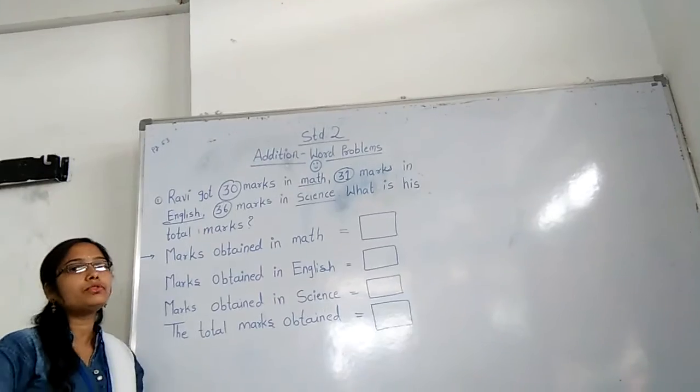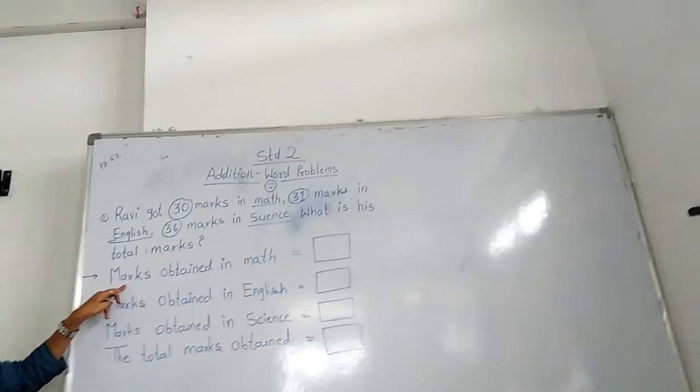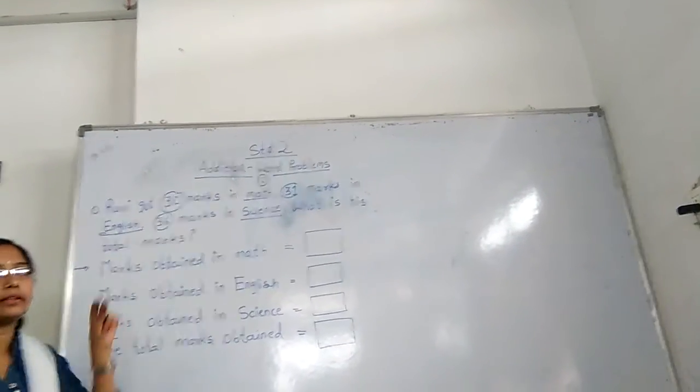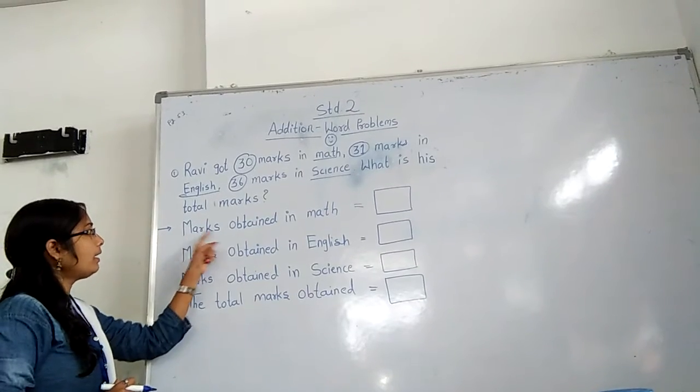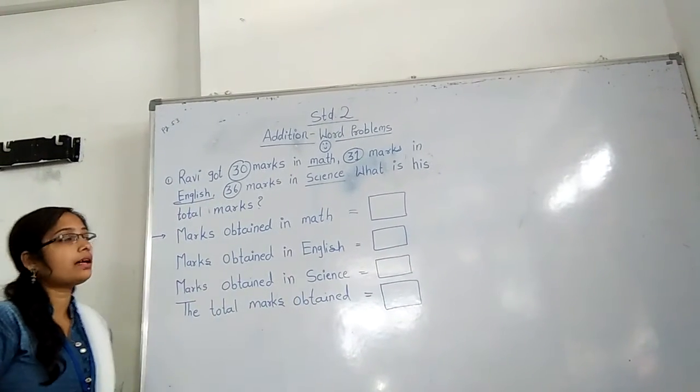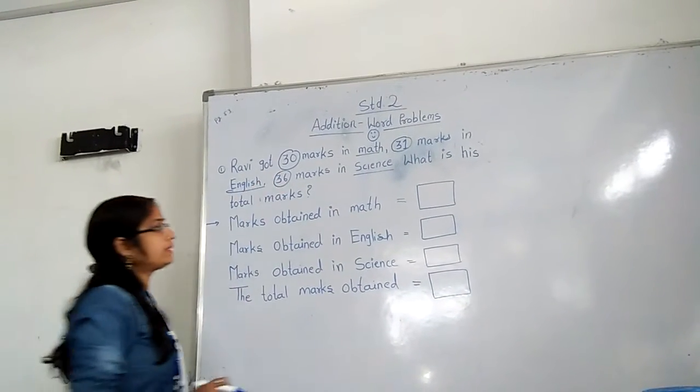So this is the word problem. We can solve it with wording. Okay, so first write here, marks obtained in math. What do they ask? Marks obtained in math. How many marks did he obtain in math? 30 marks.